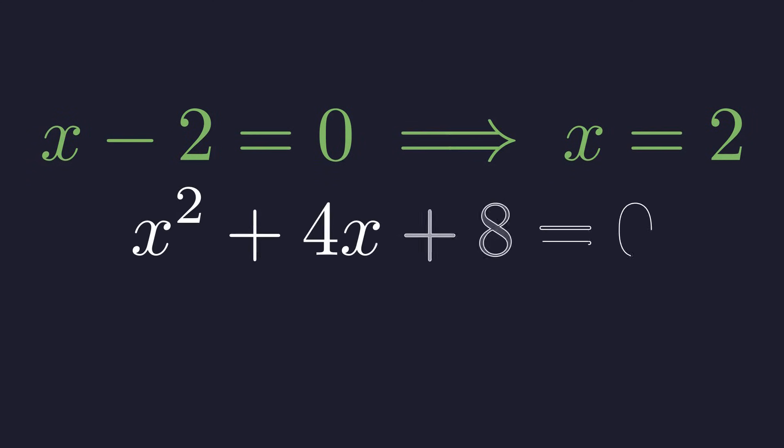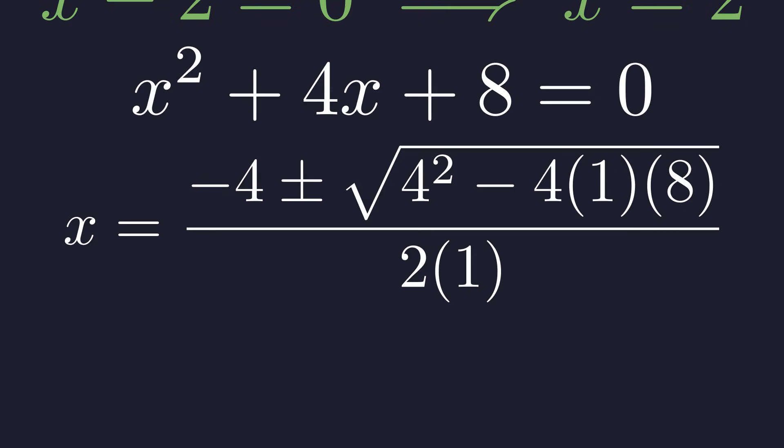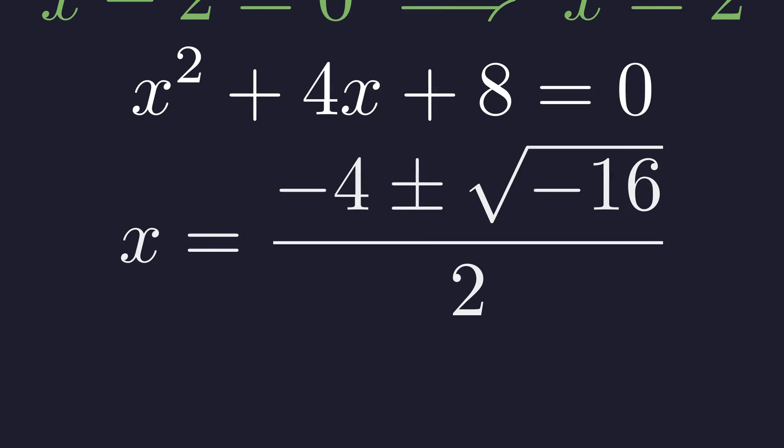Now let's set the second factor to 0. This is a quadratic, so we can use the quadratic formula. Using the quadratic formula with a equals 1, b equals 4, and c equals 8. Let's evaluate what's under the square root. 4 squared is 16, and 4 times 8 is 32. So the discriminant is negative 16. A negative discriminant tells us the roots will be complex.